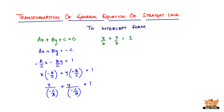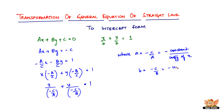You can see that this is of the form x by a plus y by b equal to 1, except that a is not just a — it is minus c by a, and b is minus c by b. So we can write: a equals minus c by a, which is equal to minus of the constant divided by the coefficient of x; and b equals minus c by b, which is equal to minus the constant divided by the coefficient of y.